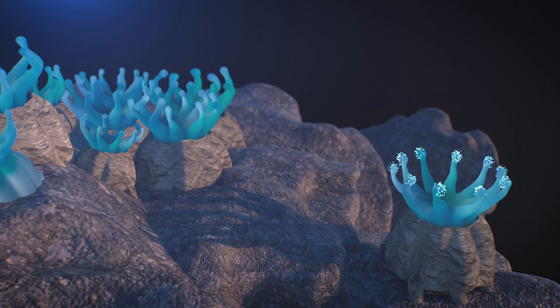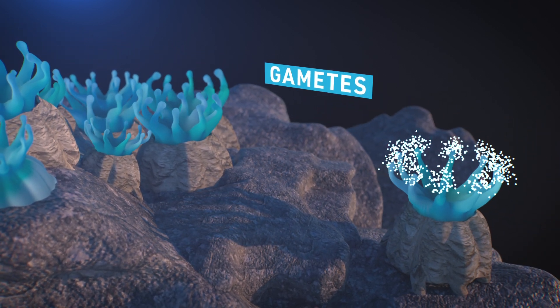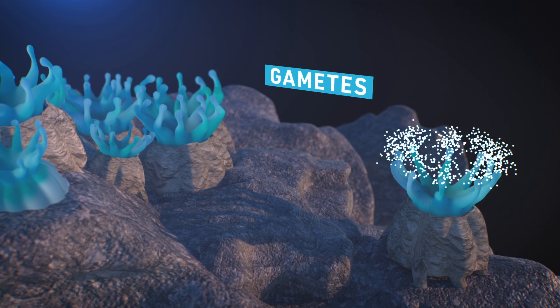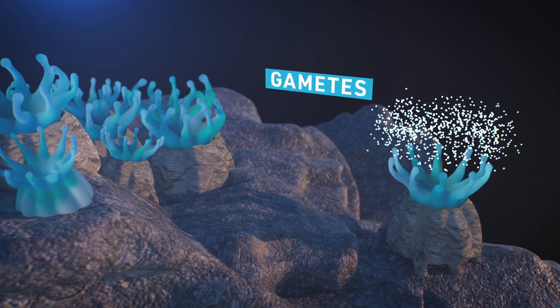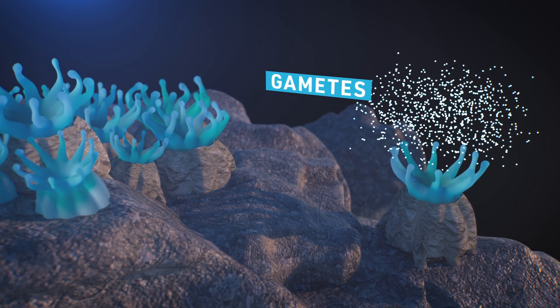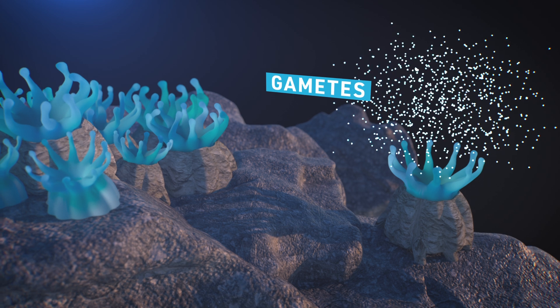Or sexually by releasing gametes, egg or sperm cells into the water column. These gametes come together to form larvae, which settle on the surface, starting the whole process again.